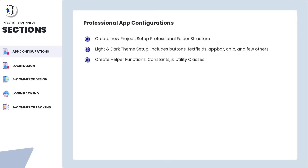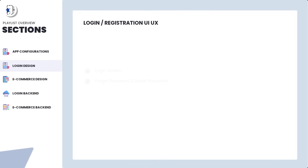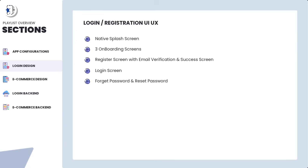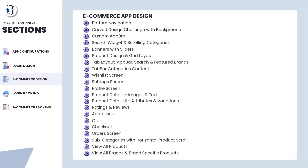The first video covers creating the project and designing an expandable folder structure including pubspec, images, and icons. The second video covers light and dark themes in Flutter — custom themes, reusable themes — and how to create constants for colors, images, and texts, plus helper functions and utilities. The login design section covers splash screen, onboarding with three screens, login, sign up, and forgot password with reset password. The e-commerce design section covers a large number of videos, and as we build, we will create custom reusable widgets that we can reuse throughout.